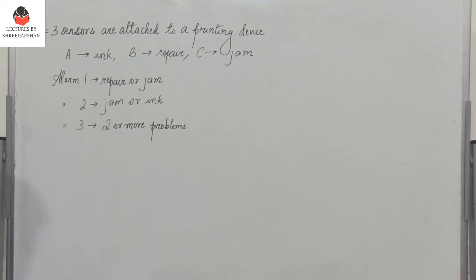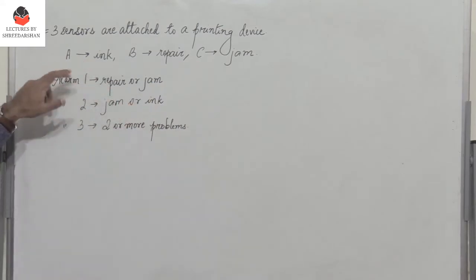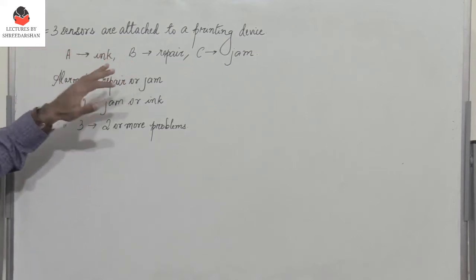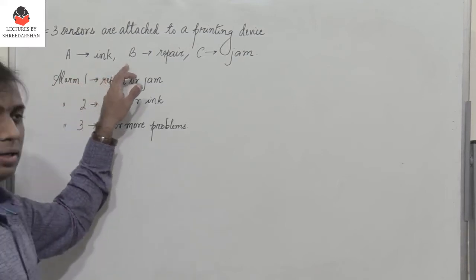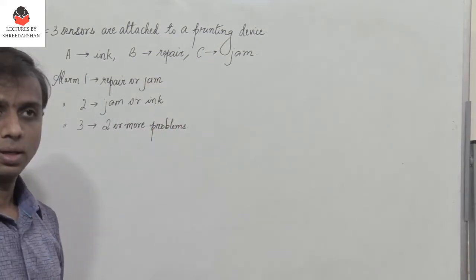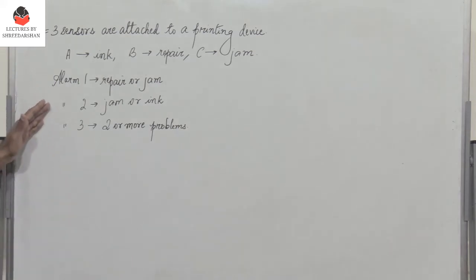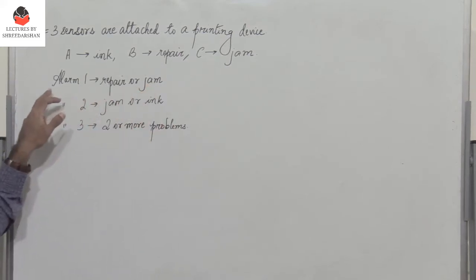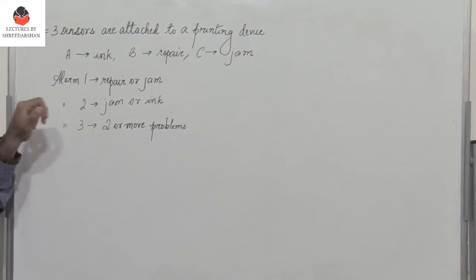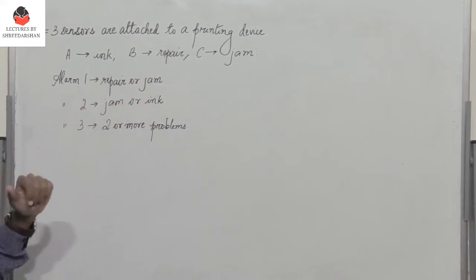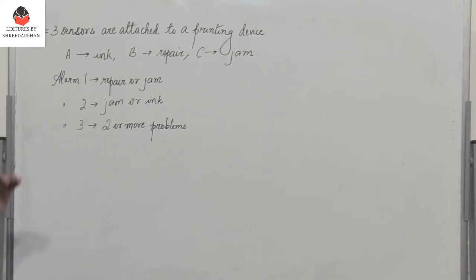So what has been given in the problem? There is a printer with three sensors A, B, and C. Sensor A indicates that the printer is short of ink. If it needs repair, it is indicated by sensor B. And if you need to jam the printer, it is indicated by sensor C. These sensors are connected to three alarms. If the printer needs repair or needs to be jammed, alarm 1 is sounded. If the printer is short of ink or needs to be jammed, alarm 2 goes on. And if there are two or more problems, alarm 3 is sounded.